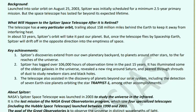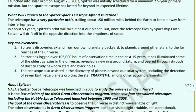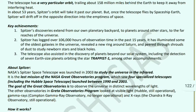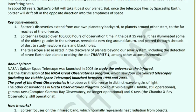Within 30 to 53 years, Spitzer's orbit will take it past our planet. But as the telescope flies by 'Spaceship Earth,' it will drift in the opposite direction and disappear further into space. The speaker humorously admits some of the scientific terms are hard to follow, and invites viewers with science backgrounds to comment on Spitzer's achievements.